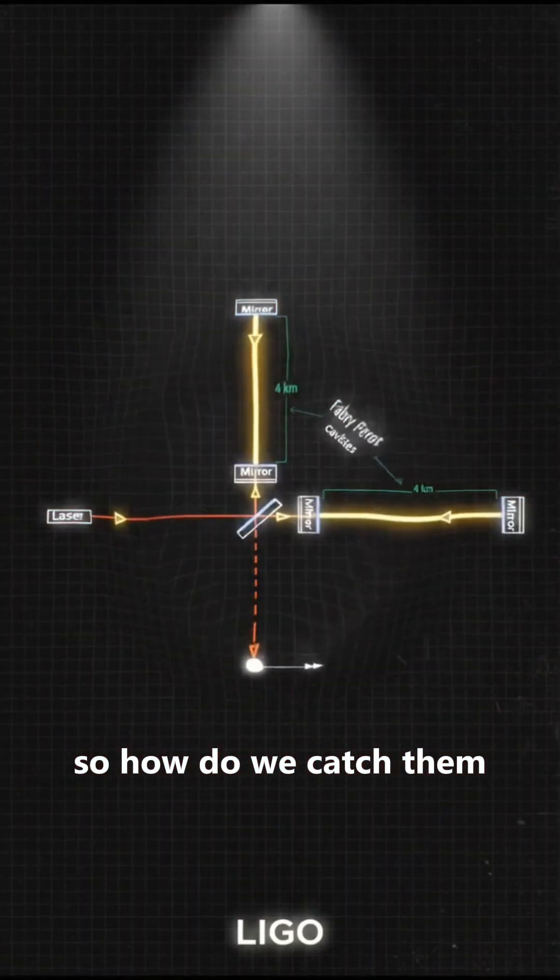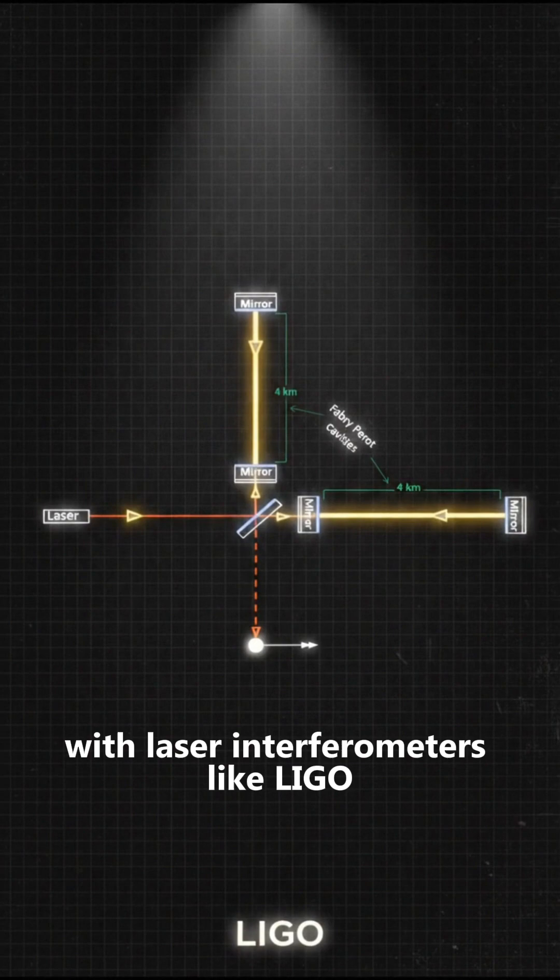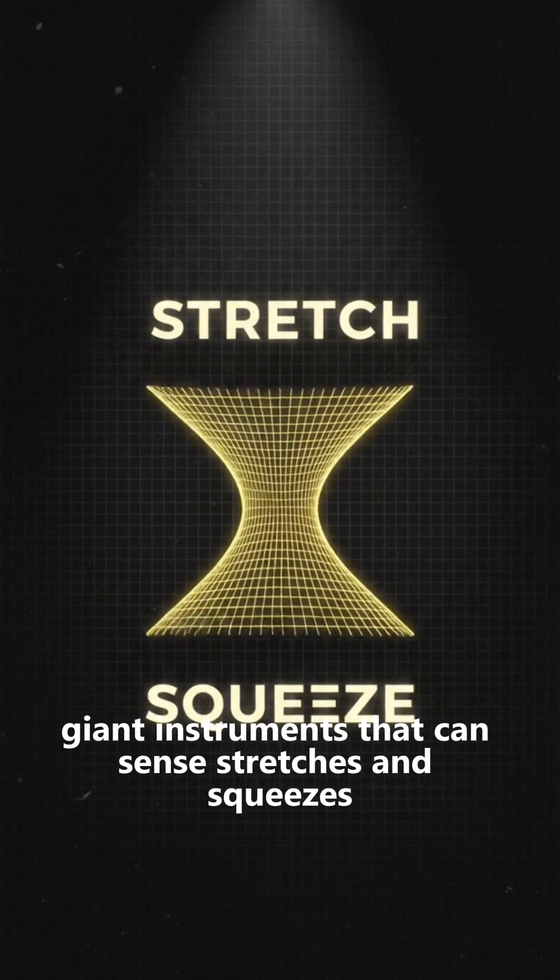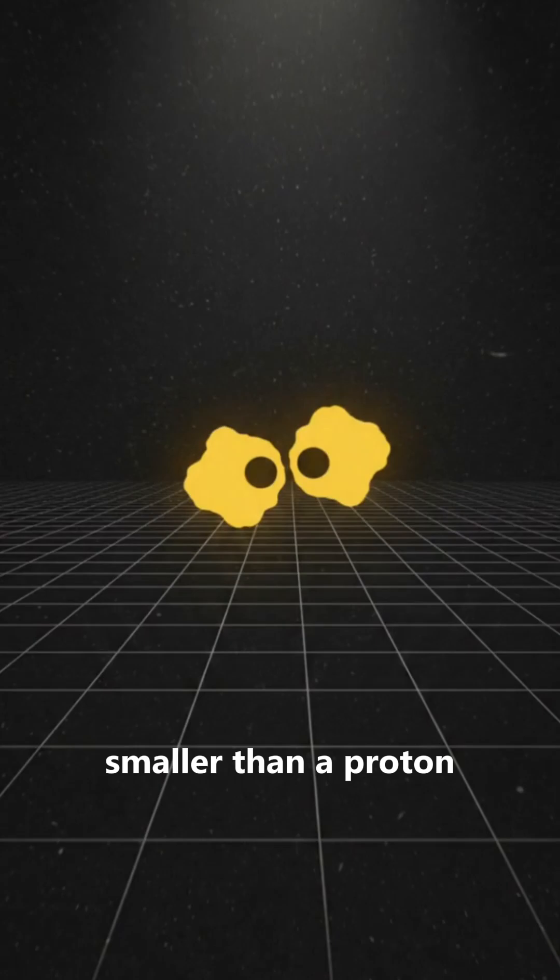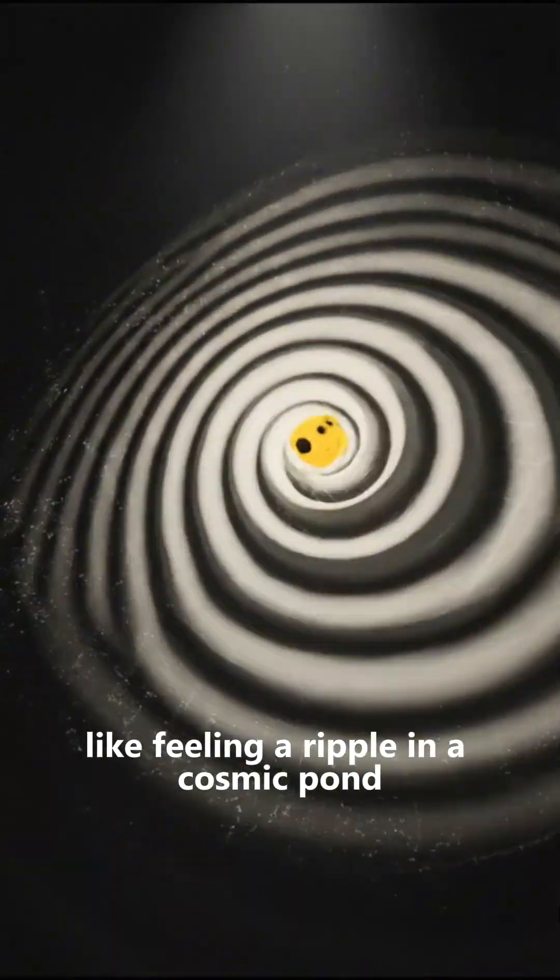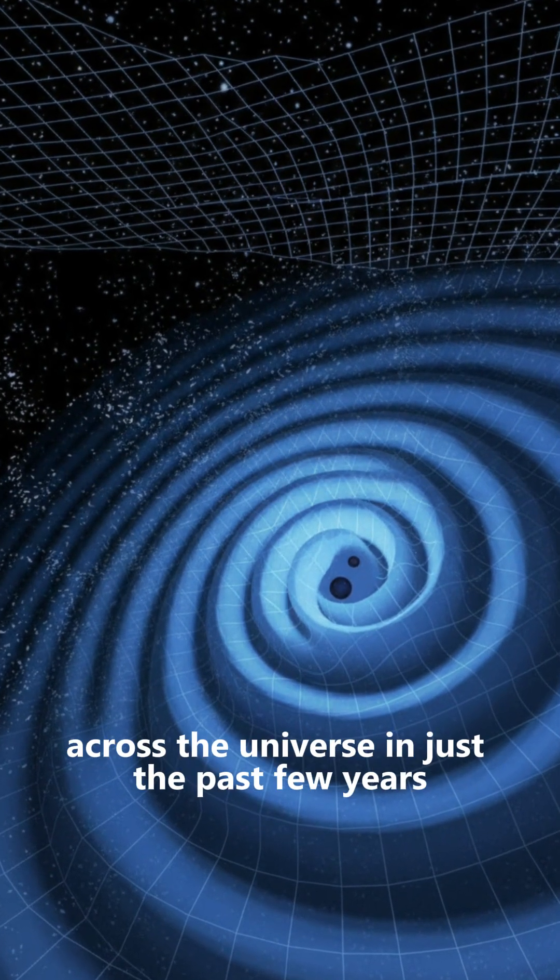So how do we catch them? With laser interferometers like LIGO, giant instruments that can sense stretches and squeezes smaller than a proton, like feeling a ripple in a cosmic pond or the beat of a drum across the universe.